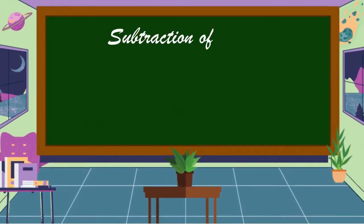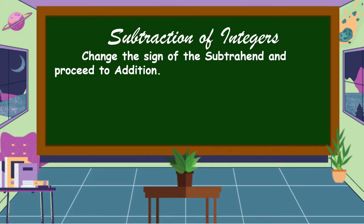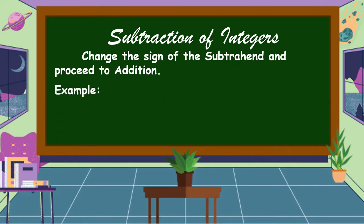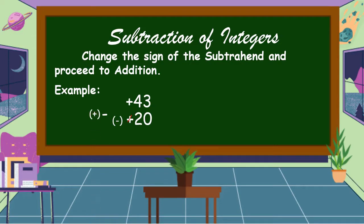Next, we're going to discuss subtraction of integers. In subtracting integers, change the sign of the subtrahend and proceed to addition. The subtrahend is the number that is subtracted from the minuend. For example, positive 43 minus positive 20. We change the sign of the subtrahend — positive 20 becomes negative 20 — and proceed to addition. Our addends are now positive 43 and negative 20. They have different signs, so we subtract: 43 minus 20 is equal to 23, and copy the sign of the bigger number, which is positive.